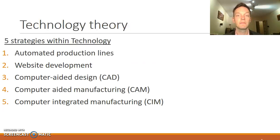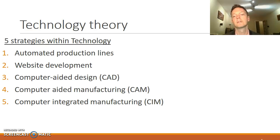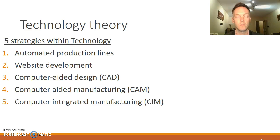Let's do a quick recap on the theory of technology. There are five strategies within technology. The first one is automated production lines. Think of high volume products like cars, shampoo, toothpaste — high volume, really, really fast, with lots of automation on those automated production lines and lots of robotics, and not many humans.